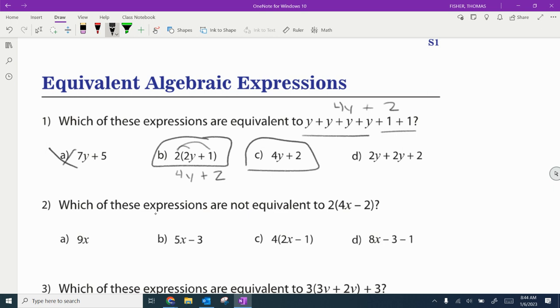And then on the last one here, part D, 2y plus 2y would be 4y. Bring down the plus 2, and that one's also equivalent as well. So all three of these examples are equivalent because they're all the same as 4y plus 2.